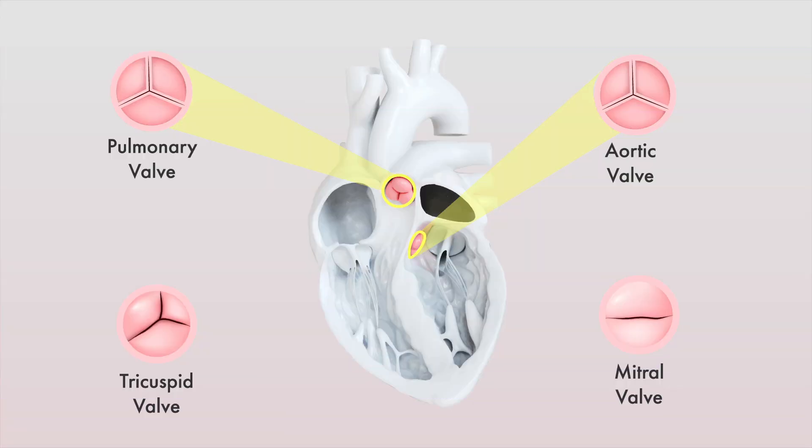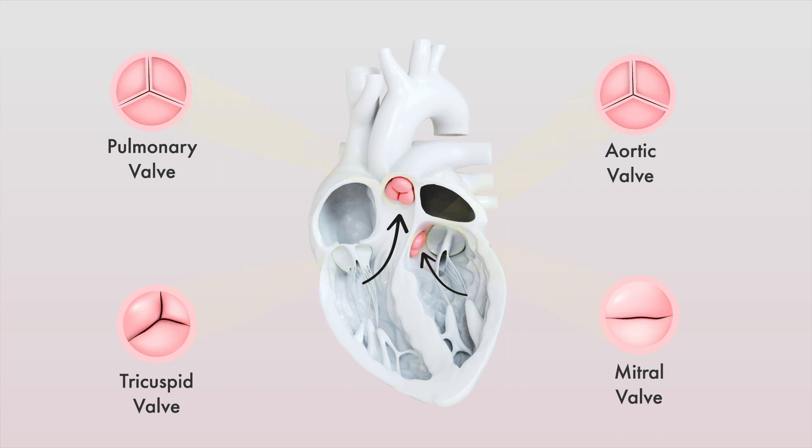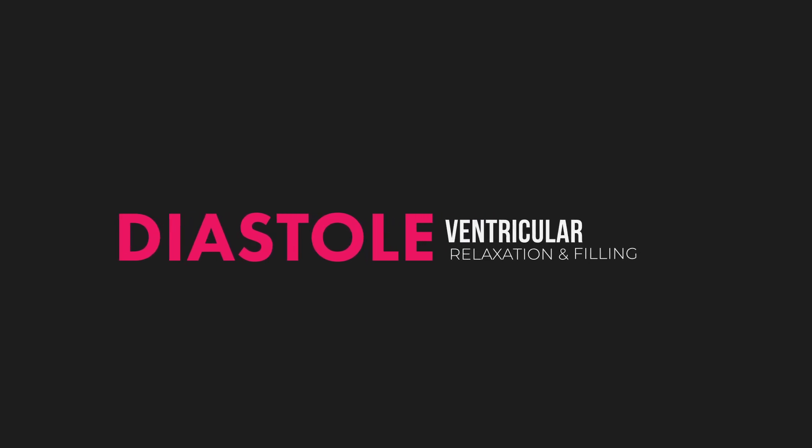As intraventricular pressures rise, blood is pushed through both aortic and pulmonary outflow tracts. At the end of systole, the semilunar valves close, and the atrioventricular valves open, resulting in the start of diastole, where the ventricles fill with blood.